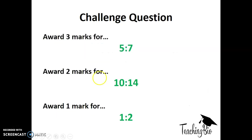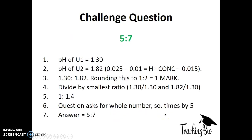If you got a ratio of 5 to 7, you'd get 3 marks. If you got 10 to 14, that's 2 marks. If you got 1 to 2, that's 1 mark. How was this done?